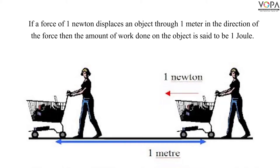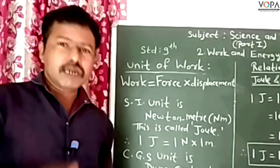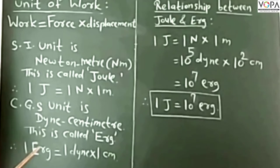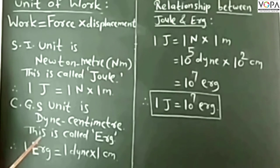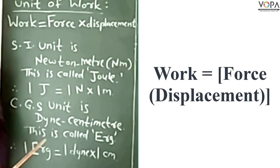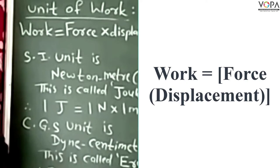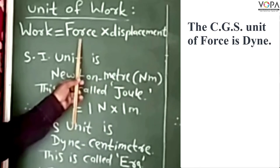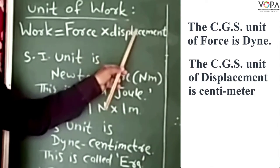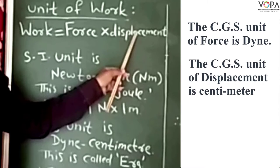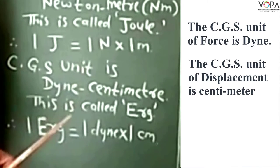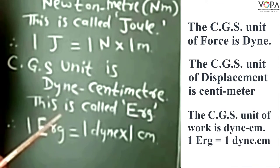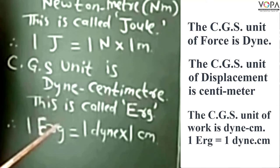Similarly, we can write the CGS unit of work. Using the same formula — work is equal to force into displacement — the CGS unit of force is dyne, and the CGS unit of displacement is centimeter. So the CGS unit of work is dyne-centimeter, and this is called an erg.